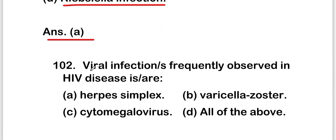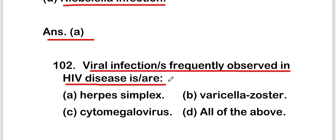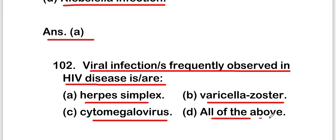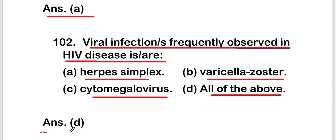The next question is: viral infections frequently observed in HIV disease are — herpes simplex virus, varicella zoster virus, cytomegalovirus, or all of the above? The right answer is option D, that is all of the above. Herpes simplex virus, varicella zoster virus, and cytomegalovirus are all frequently observed in HIV disease.